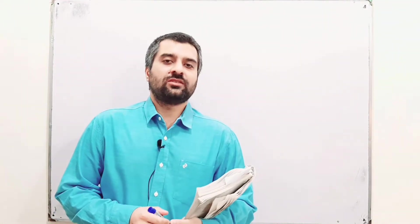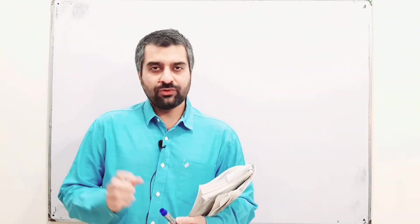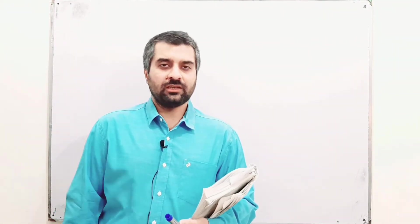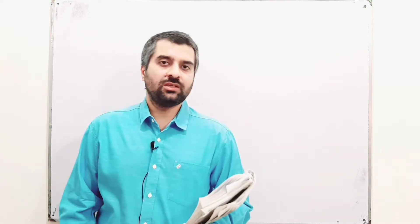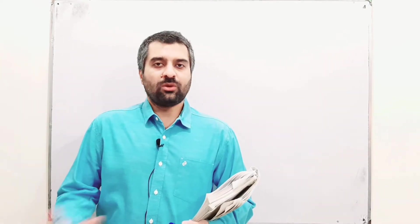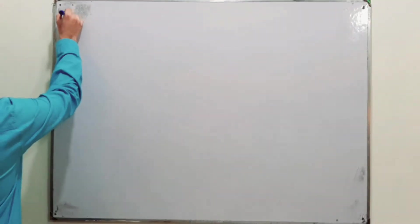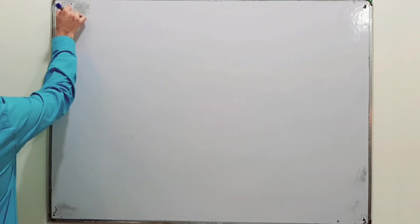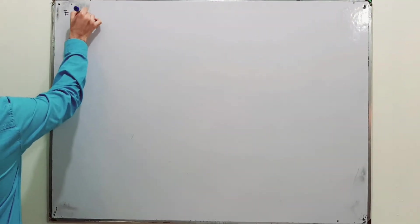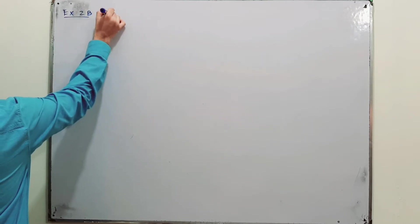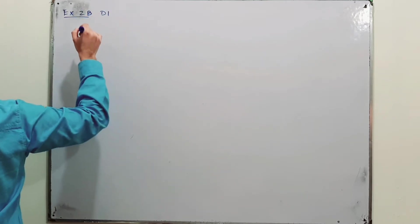In this video we are going to solve Exercise 2b of D1 7th edition, which is relatively simple. We have to basically perform the operations of addition and subtraction. Let us start the exercise: Exercise 2b of D1 7th edition.